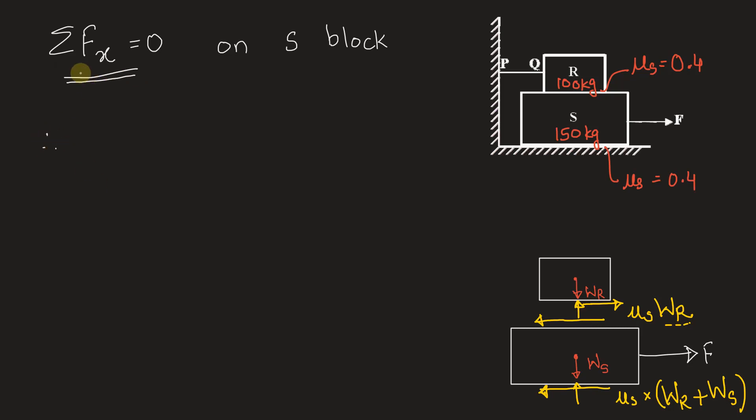So therefore by summation Fx equal to 0 on S block we have force towards right F which will be a positive value minus the backward forces, which are nothing but mu S WR plus mu S times WR plus WS. This is equal to 0.